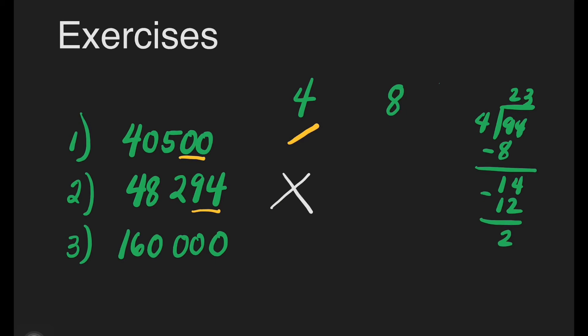Next, is 160,000 divisible by 4? Yes, because it ends with 2 zeros. It means this is divisible by 4.